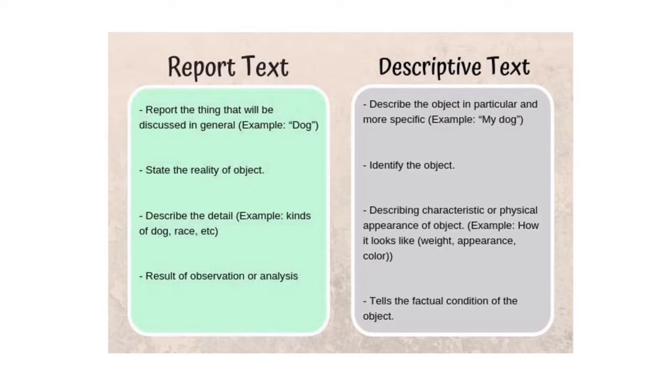Sementara kalau descriptive text misalnya langsung disebutkan my dog, anjing saya, jadi spesifik bukan anjing secara keseluruhan. Kalau descriptive text mendeskripsikan characteristic or physical appearance of object, misalnya beratnya, warna, dan sebagainya.